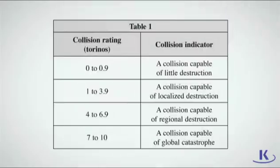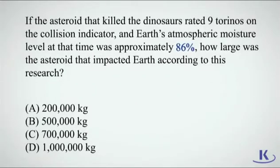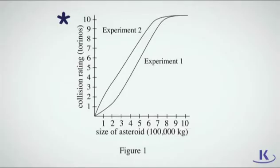Yes, you're looking at Table 1, and the question stem tells you that the moisture level was 86% at impact. That tells you that you should follow the line for Experiment 1. Draw a line from the 9 torino mark on the y-axis to the line for Experiment 1, then extend it down to the x-axis. The size of the asteroid would be 700,000 kg, or choice C.